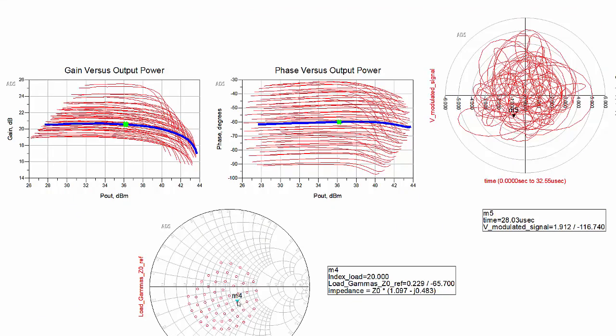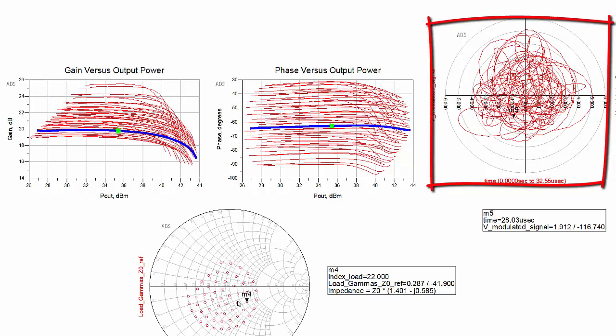This shows the gain in phase distortion curves from the measured load pool data file. This shows the trajectory diagram of a modulated signal.